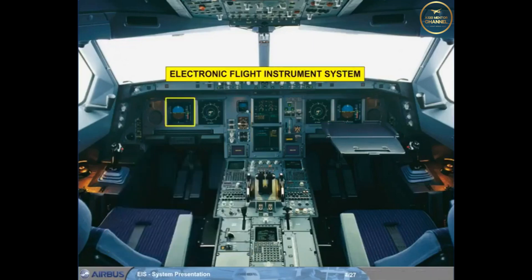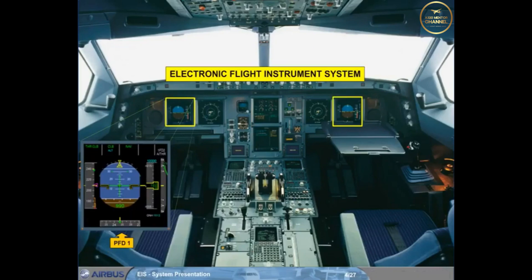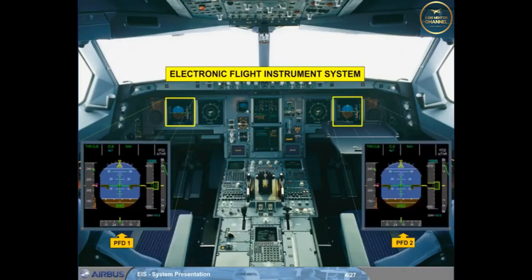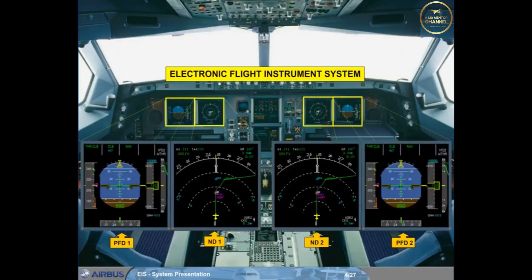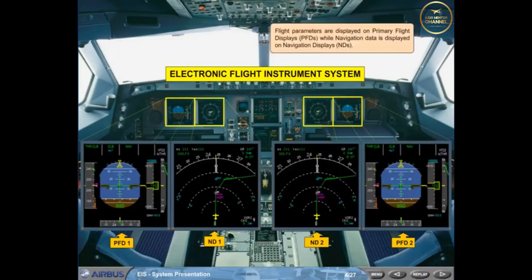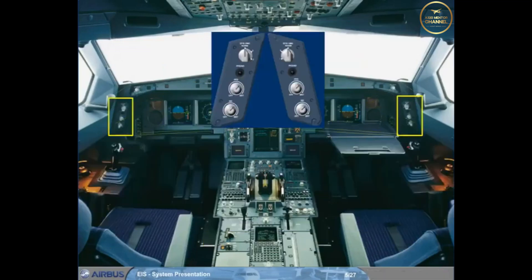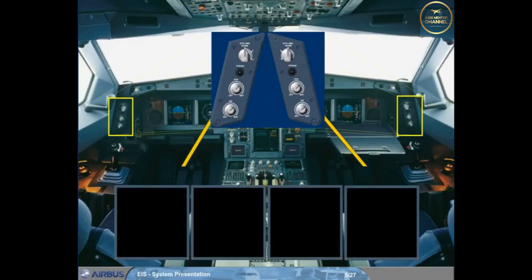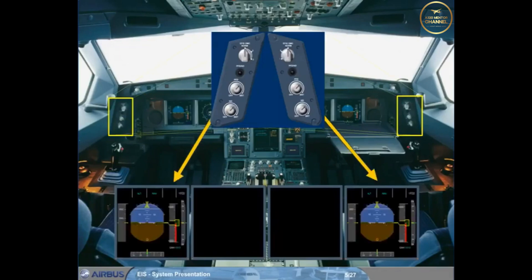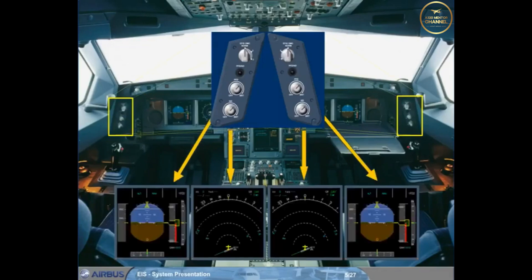Flight parameters are displayed on Primary Flight Displays, PFDs, while navigation data is displayed on Navigation Displays, NDs. Outboard of the PFD are control knobs to adjust the brightness of the associated PFD and ND, or to turn the display off.